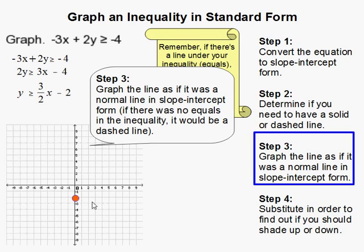So in this case, b is negative 2 and the slope is 3 over 2, so you go over 2 up 3.